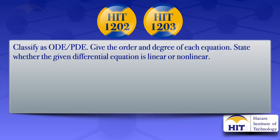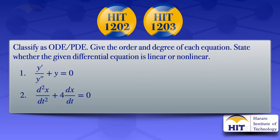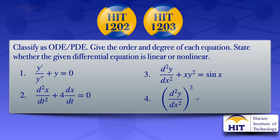In this tutorial we're going to classify equations as ODE or PDE, then give the order and degree of each equation and state whether it is linear or non-linear. We are going to look at four equations. The first one is y prime divided by y prime prime plus y equals zero. The second is the second derivative of x with respect to t plus 4 multiplied by the derivative of x with respect to t equals zero. The third is the second derivative of y with respect to x plus x y squared equals sine x, and the last one is the second derivative of y with respect to x raised to the power three plus x multiplied by the derivative of y with respect to x raised to the power four.